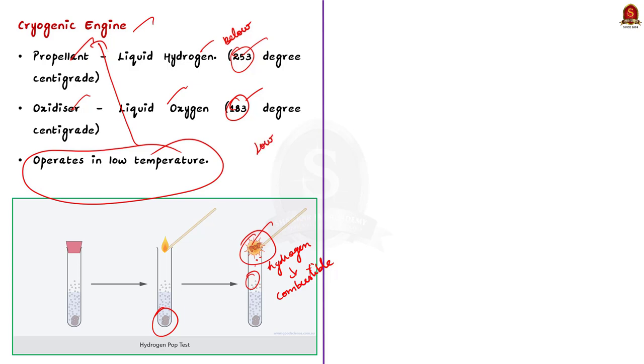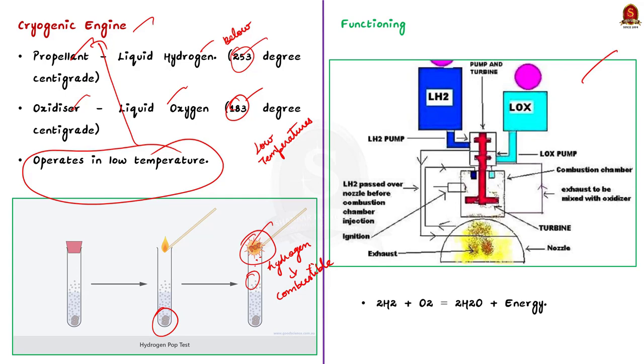Although the operation of the engine is very complex, let me explain a highly simplified version of the working. Look at this schematic diagram. In the blue tank, liquid hydrogen is stored, and in the cyan tank, liquid oxygen is stored. These two mix in the combustion chamber where combustion takes place.